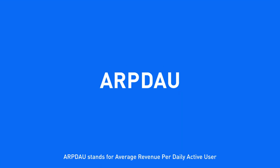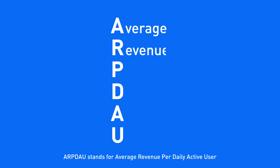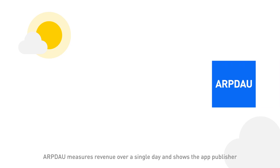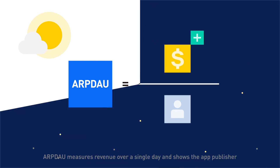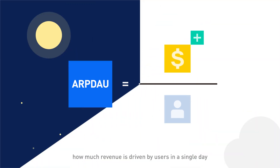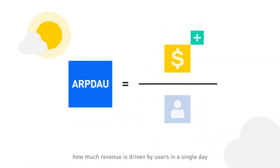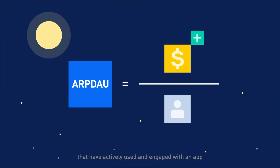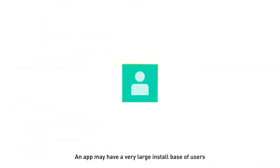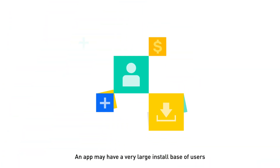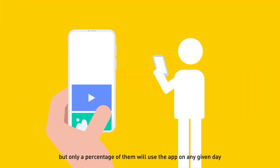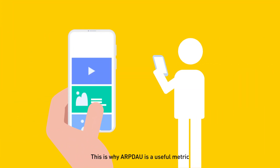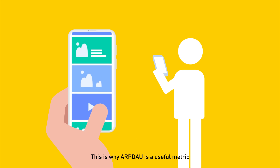ARPDAU stands for Average Revenue Per Daily Active User. ARPDAU measures revenue over a single day and shows the app publisher how much revenue is driven by users in a single day that have actively used and engaged with an app. An app may have a very large install base of users, but only a percentage of them will use the app on any given day — this is why ARPDAU is a useful metric.